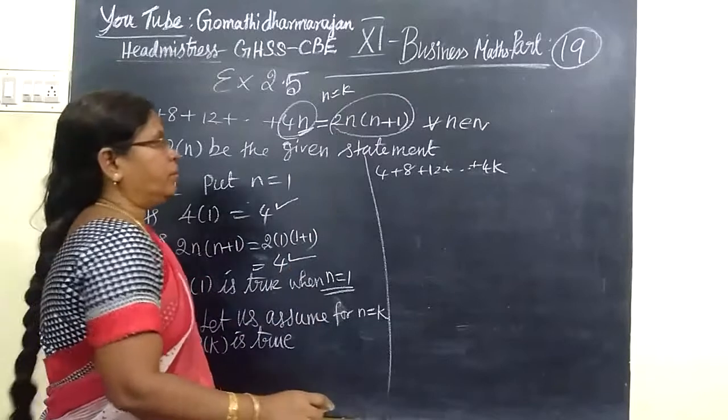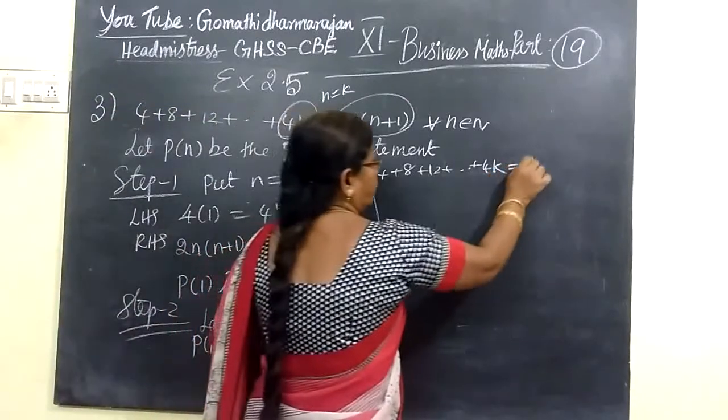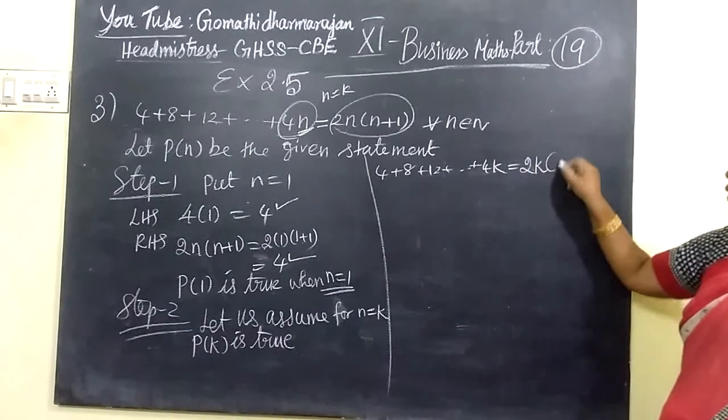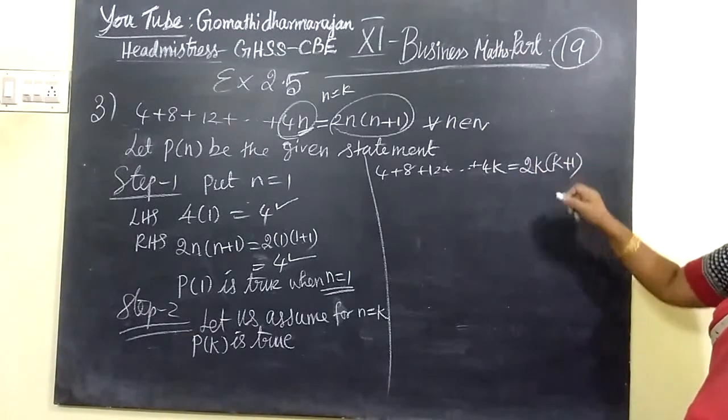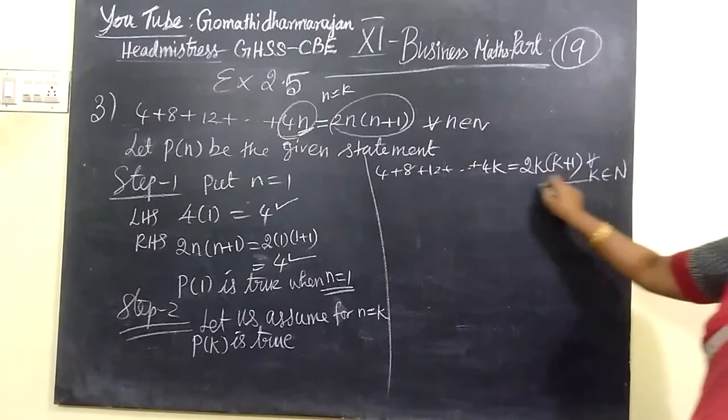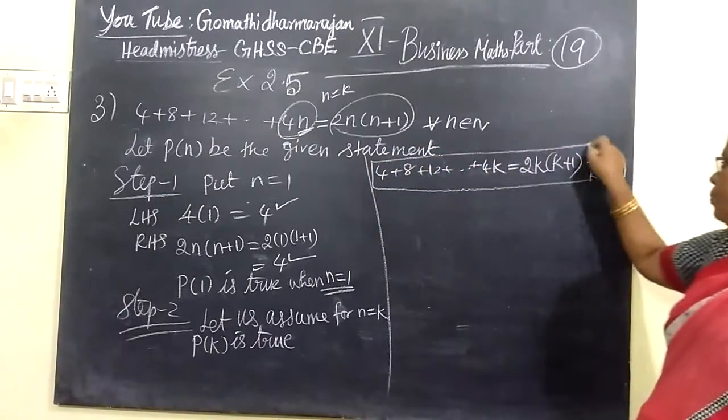Now from the statement N is known. In the statement, 4 plus 8 plus 12, the pattern is 4. Very simple. N equal to the instead, you just write K. So wherever N is now, you write 2 bracket K, bracket K plus 1, for all K belongs to N. So this is step 2.